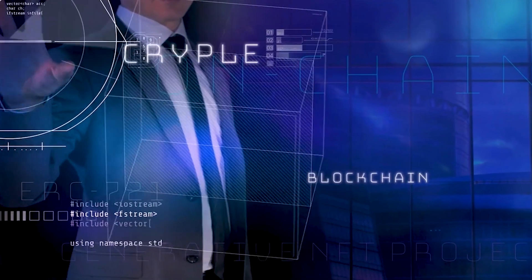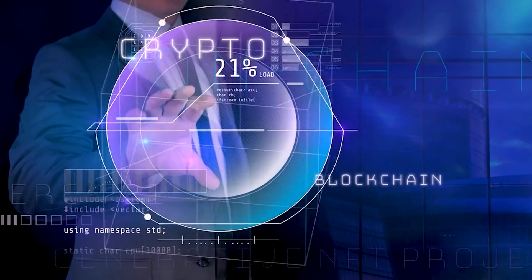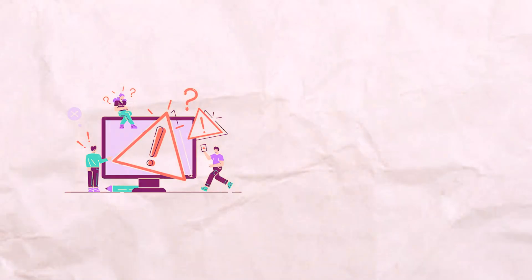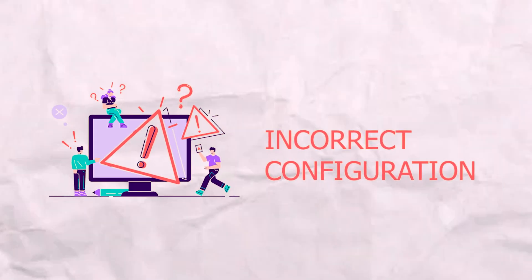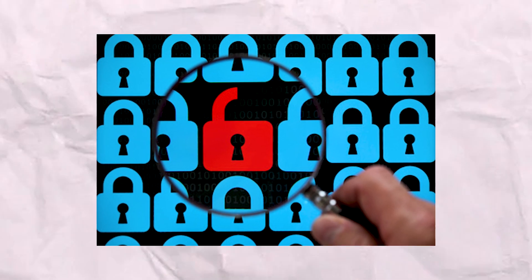JWTs are often praised for their crypto-agility — that is, their ability to easily switch between different cryptographic algorithms. Sounds good, right? But let's dig a bit deeper. Crypto-agility can often translate to crypto-fragility. Switching between algorithms can be dangerous if not done correctly. Minor misconfigurations, poorly chosen algorithms, or weak keys can lead to vulnerabilities and security breaches.